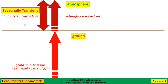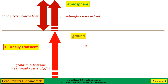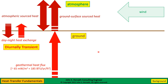When we move to what I call seasonally transient, we now have to consider additional things — specifically the atmospheric source heat, which can increase and decrease during the course of several months. That's what I mean by seasonally transient: the typical change between summer and winter in most temperate climates. If we go to a diurnal or daily transient, we now have a day-night heat exchange going on at the ground surface. This is much more complex, and when we get down to looking at daily changes, we have to start considering things like wind, which will affect the temperatures as well.